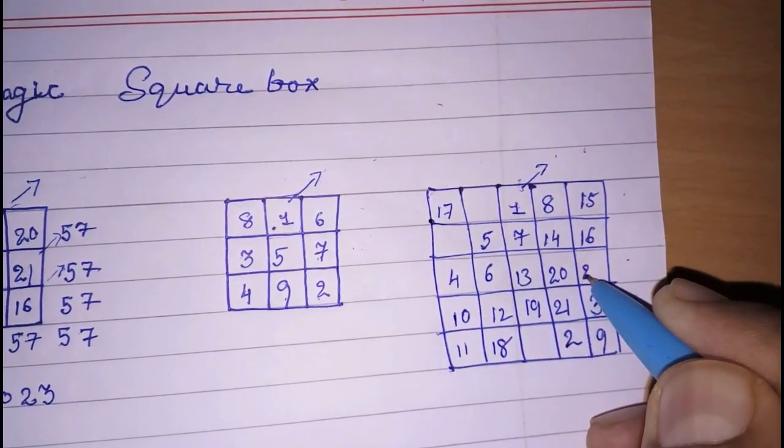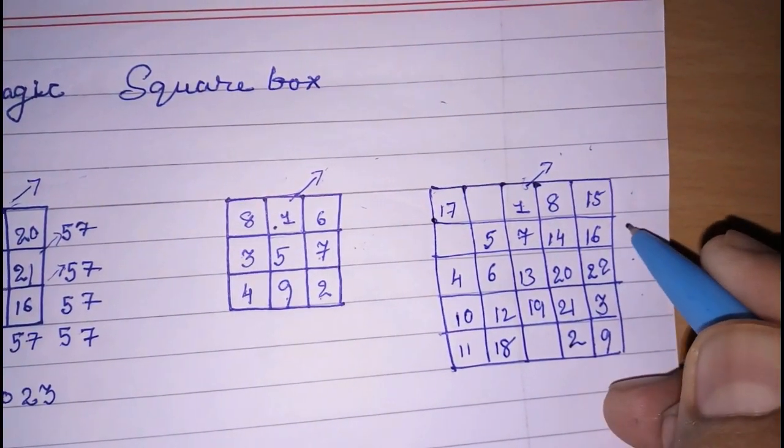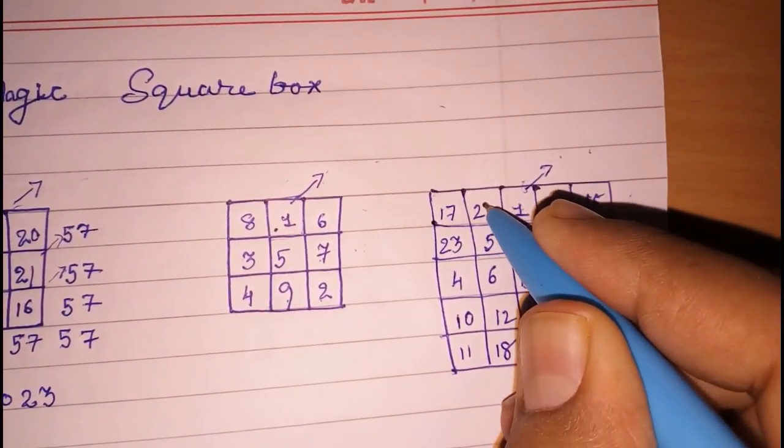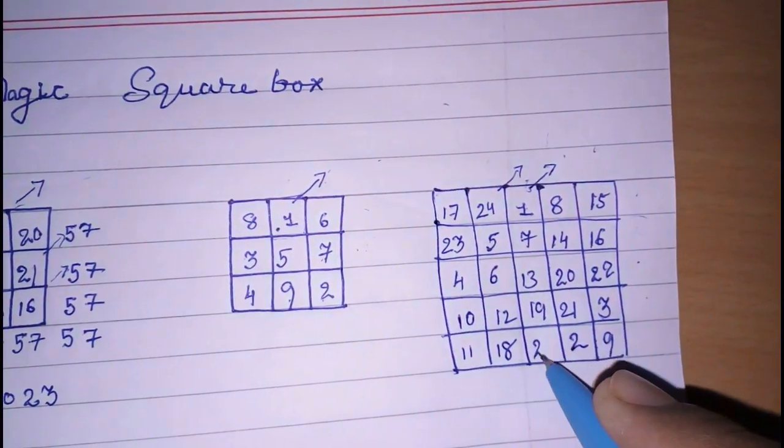Again 21, 22, again no box here, so here, 23, and 24, and so here come 25.